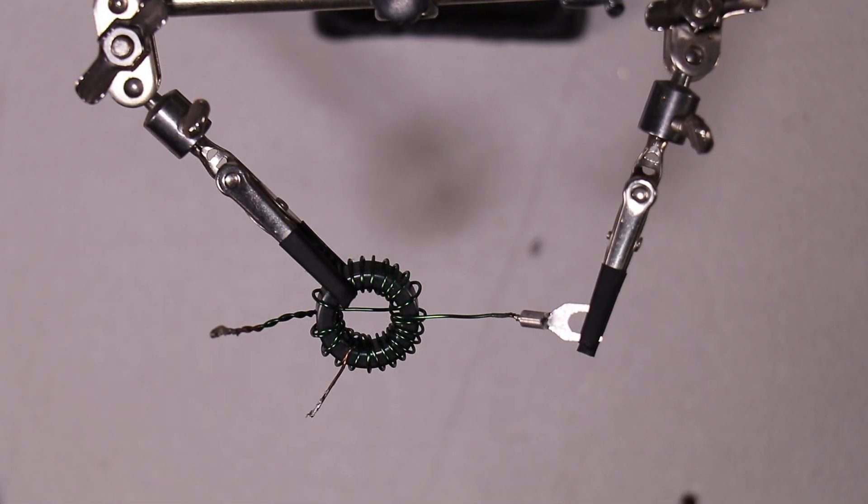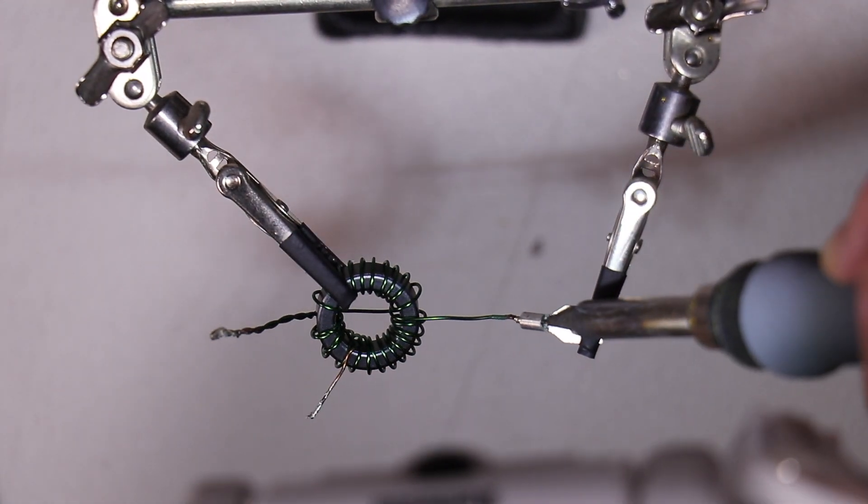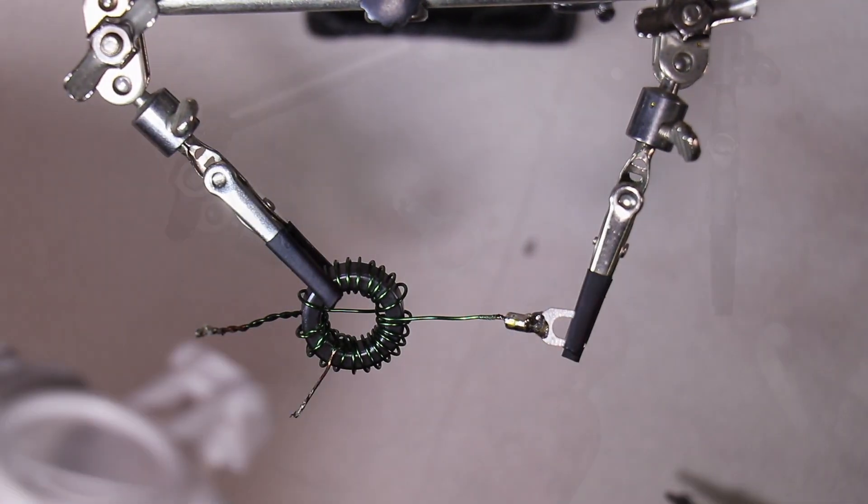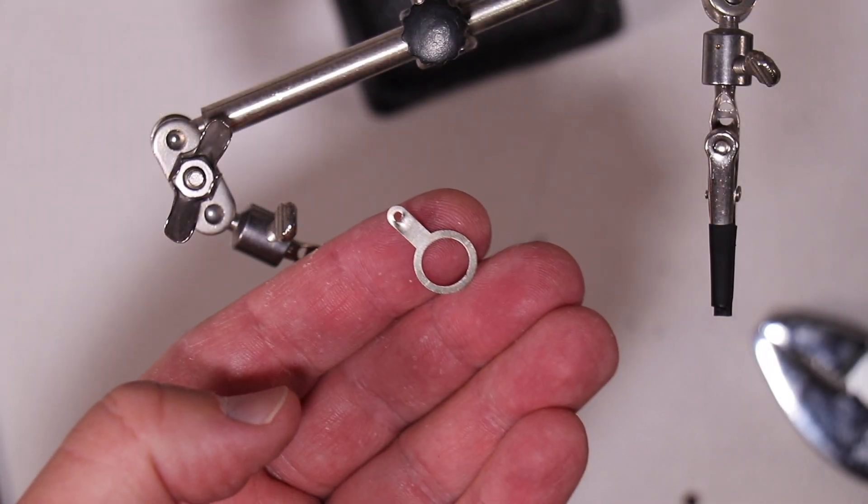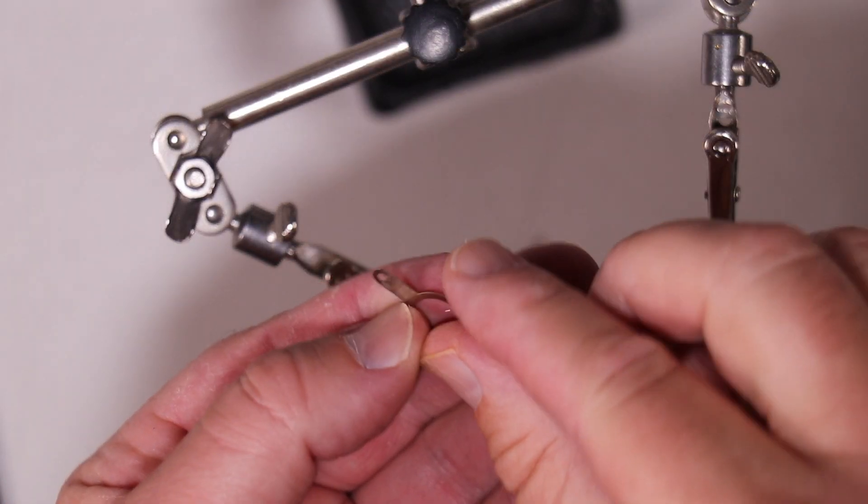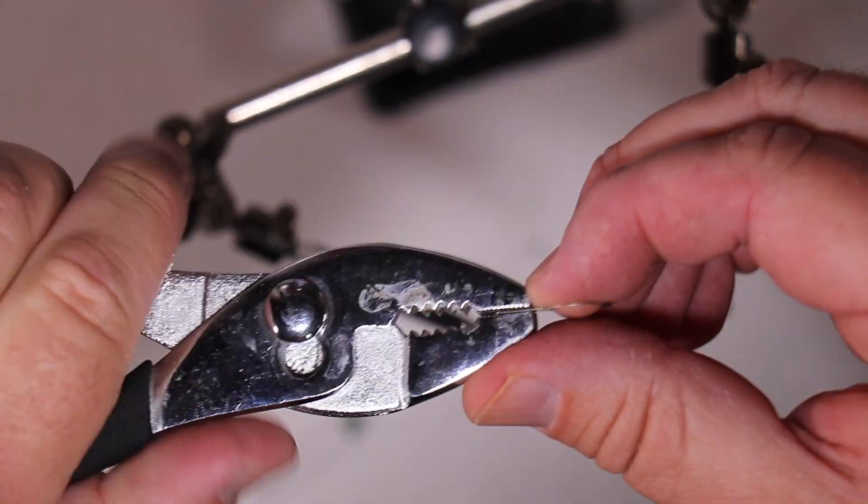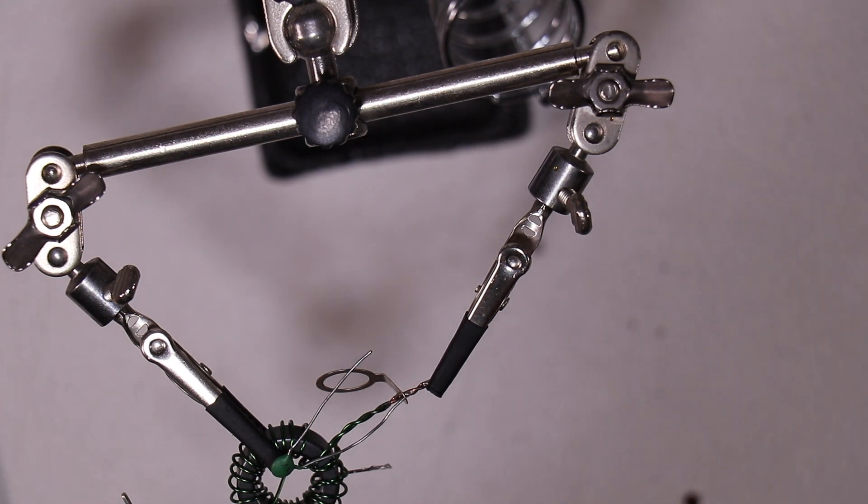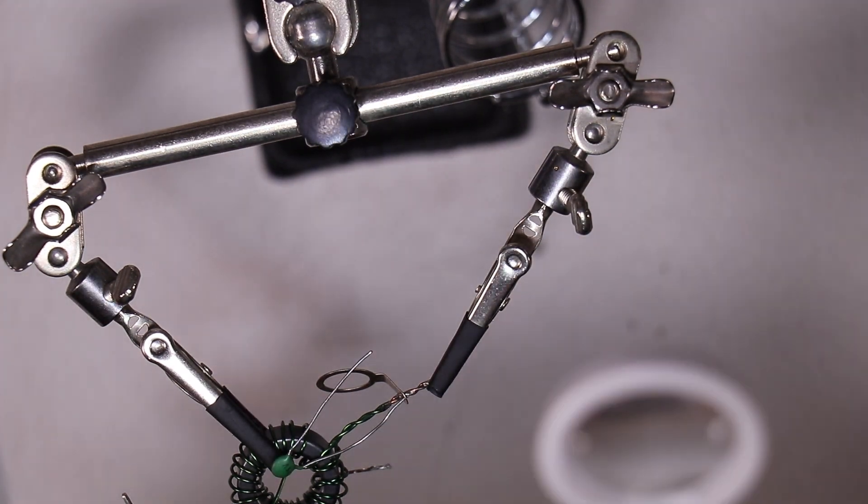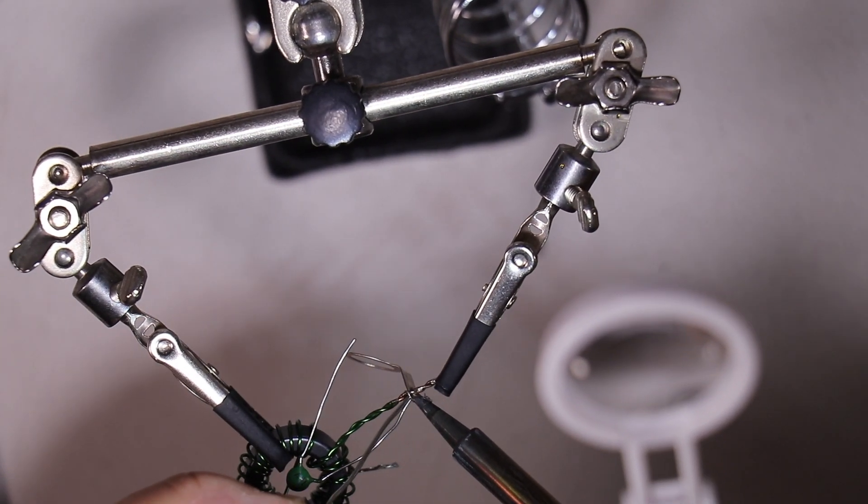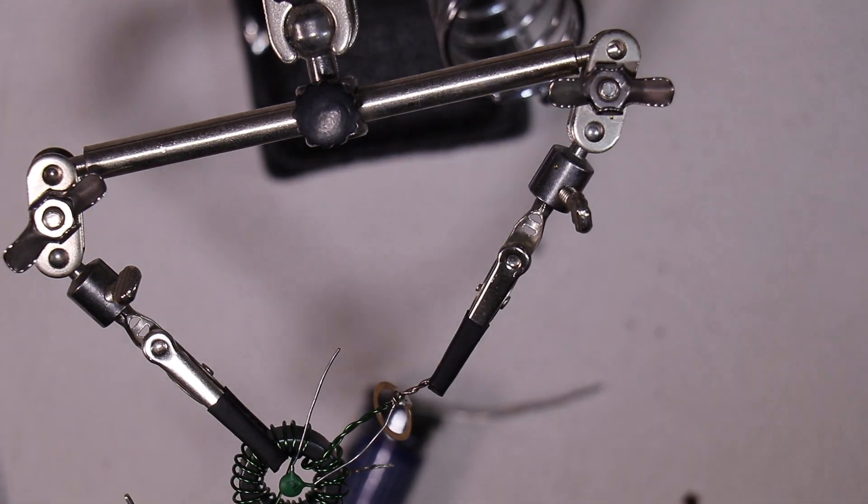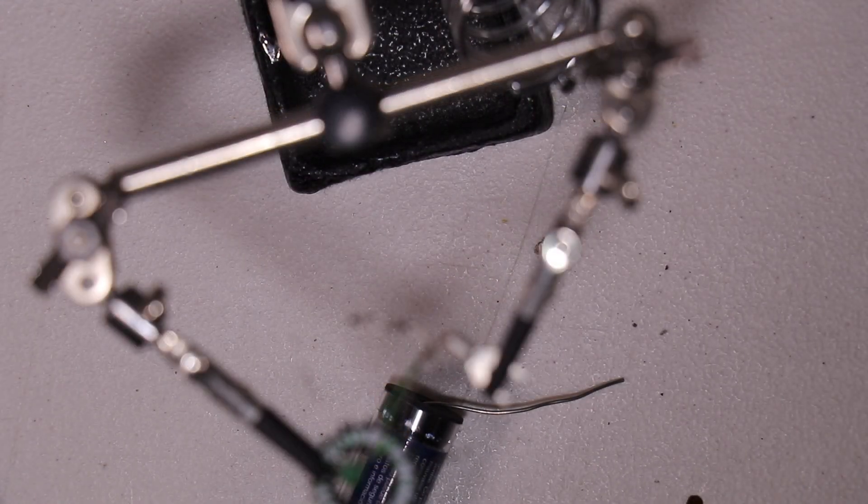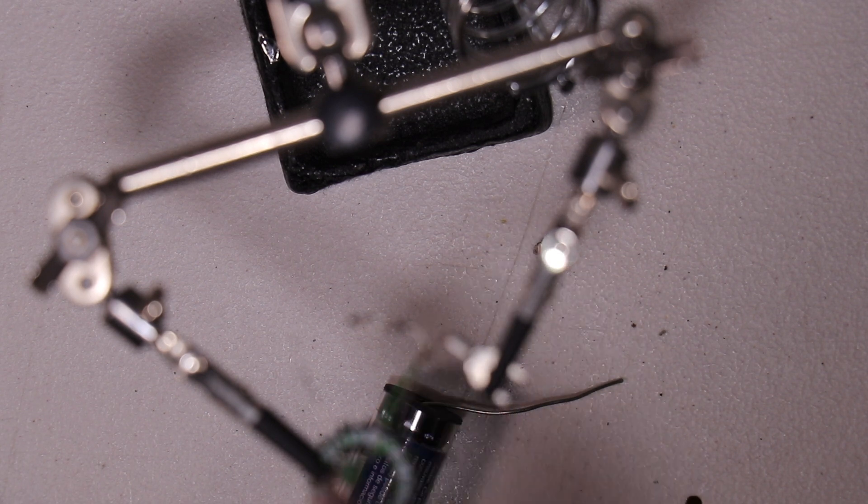And now we're going to solder this number eight spade to the wire that we cut to an inch. You need to bend the BNC solder lug at a 45 degree angle. Okay now we have to solder the BNC solder lug and the capacitor to the twisted pair. Now we're going to solder the last number eight spade into the end of the twisted pair.